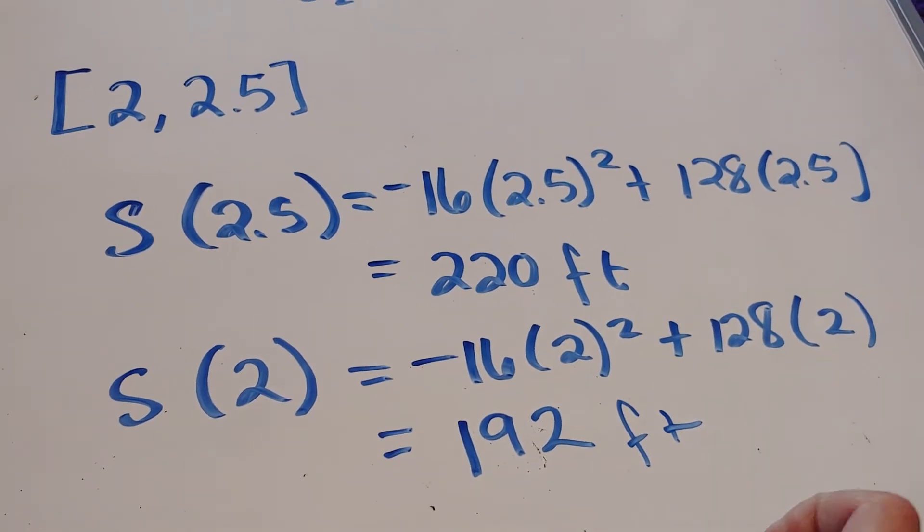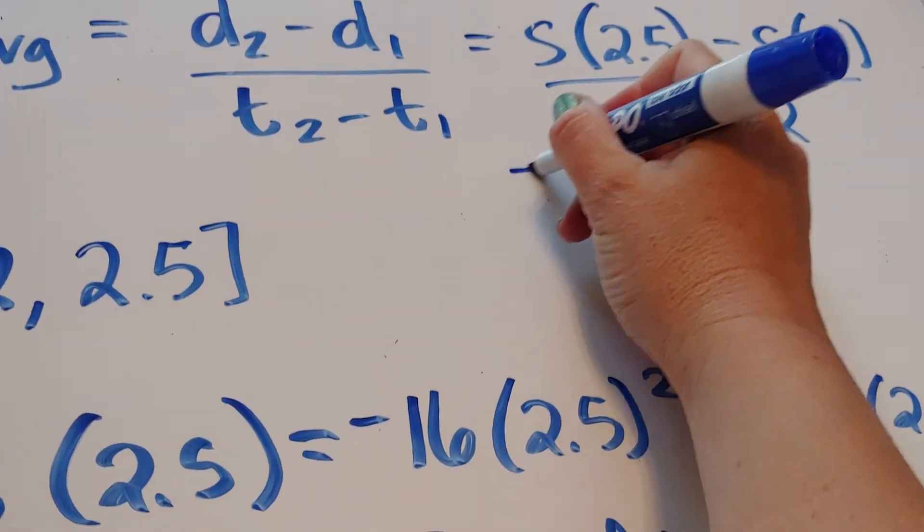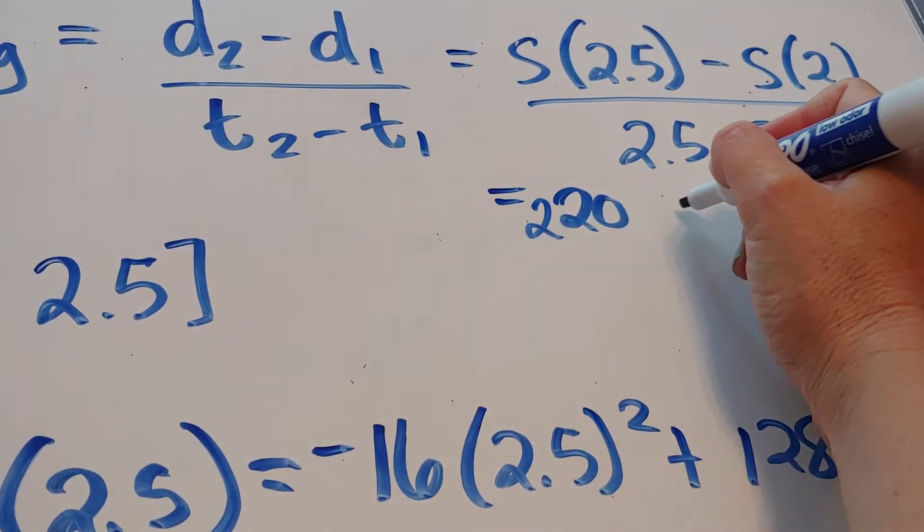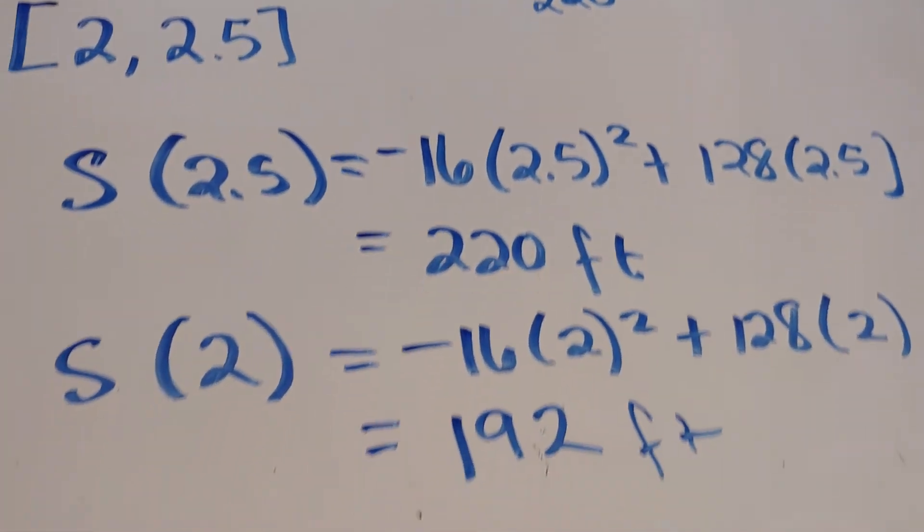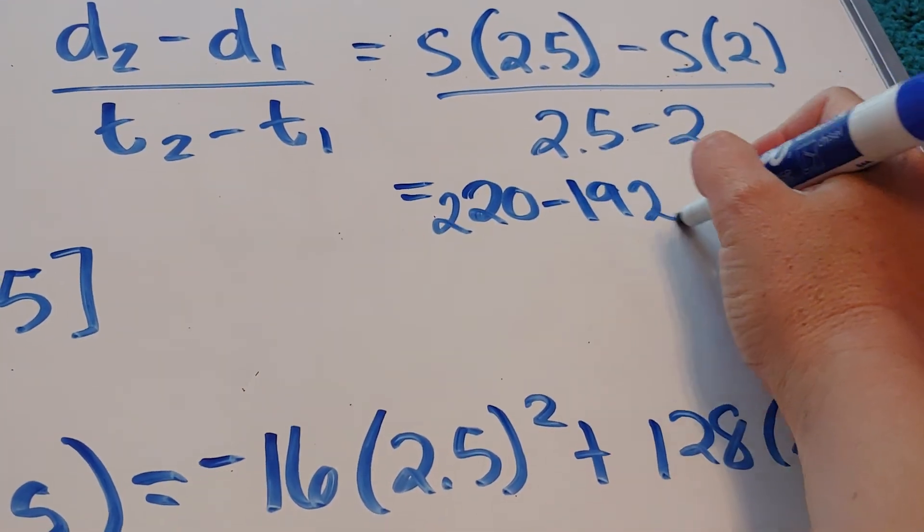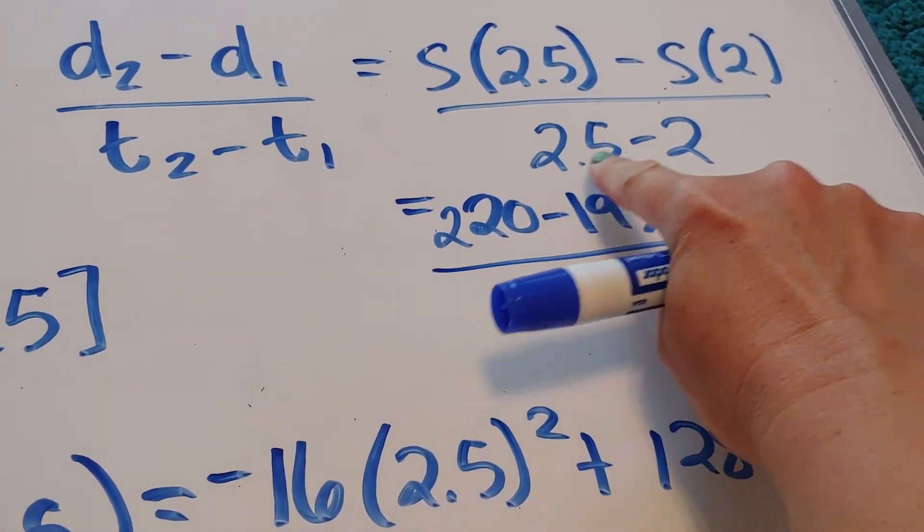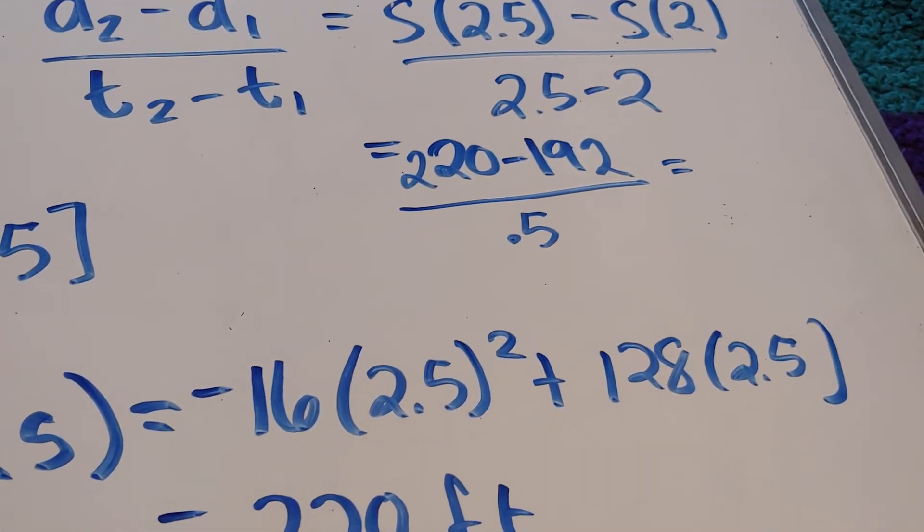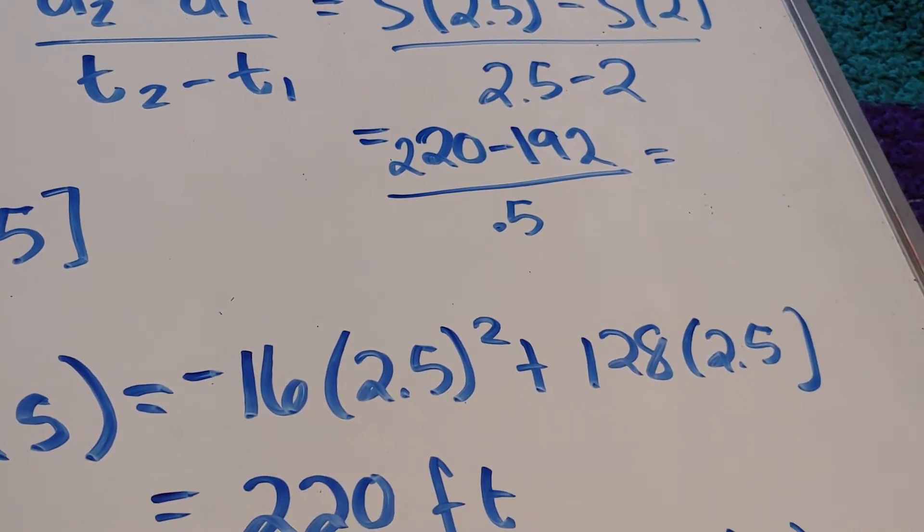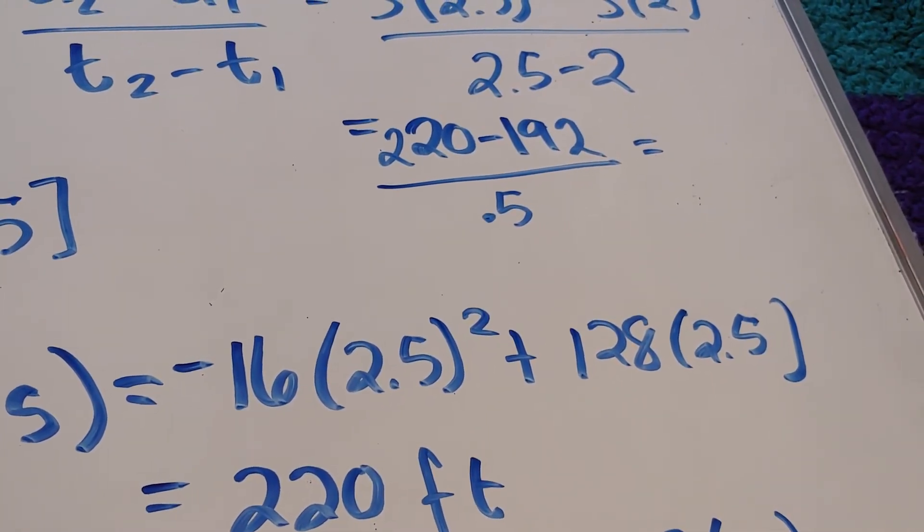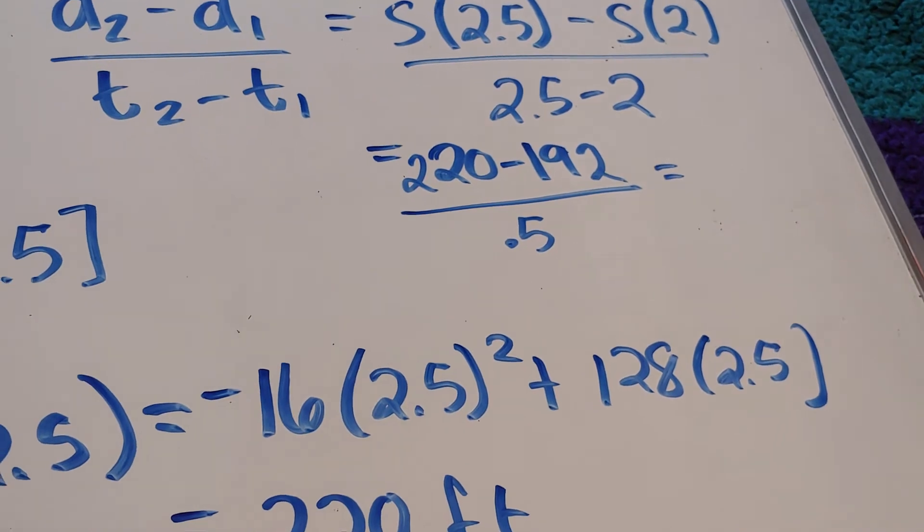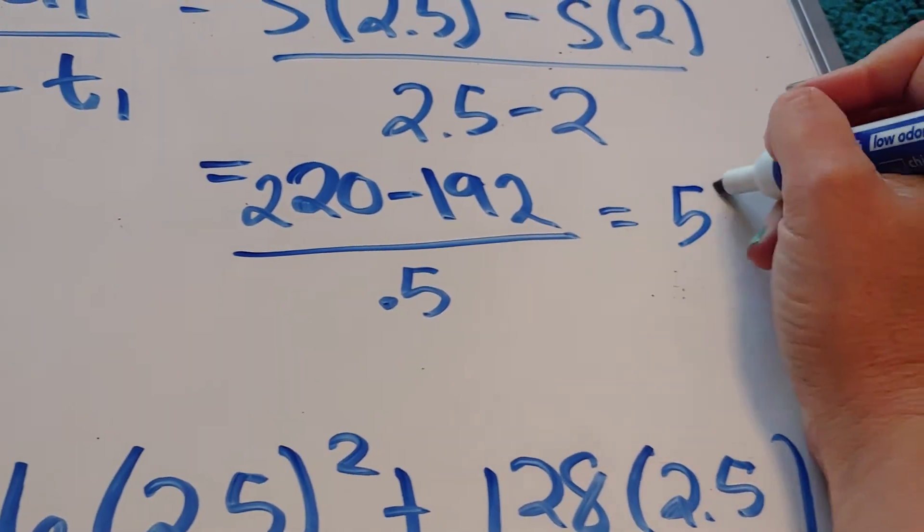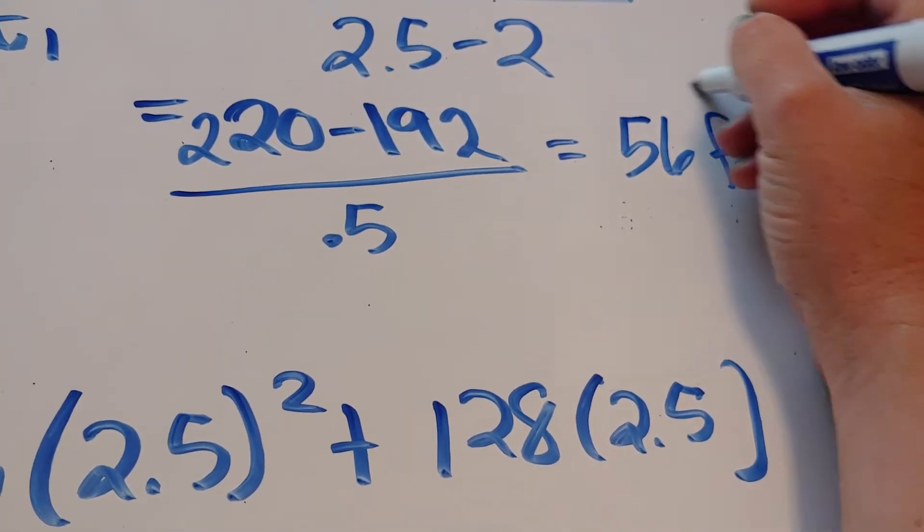So what I'm going to do with these two numbers is I'm going to have the first number of 220, subtract 192, and then my denominator is that 2.5 minus 2, which is 0.5. So let's take our calculator. Take 220 minus 192 and then divide it by 0.5.